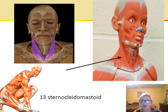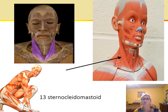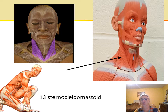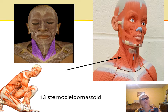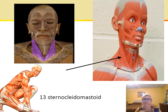The sternocleidomastoid — all those words tell you where this muscle is located. We have the sternum, the clavicle, and the mastoid process. The muscle draws the mastoid process down toward the same side, which causes the chin to turn up toward the opposite side. When both sides act together, they flex the neck.